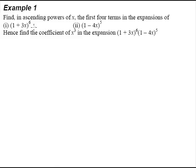Example 1: find in ascending powers of x the first four terms in the expansion of (1 + 3x)^6 and (1 - 4x)^5. Let's get started. For those who may not be familiar with the binomial expansion, I encourage you to open up a textbook and turn to the page where you can see the formula, so that you can follow better.